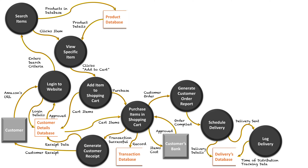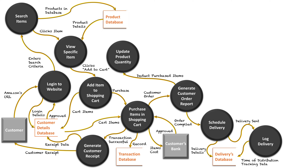Next, when we generate the customer order, item quantities within Amazon's databases get depleted. So after fulfilling orders, they need to purchase more products. We deduct the purchased items from the product inventory and update the product quantity — meaning we now have less of that product — and that goes into the product database. This also links back to when customers are viewing items and see that a product is out of stock. So the product gets updated with reduced stock and stored in the product database.